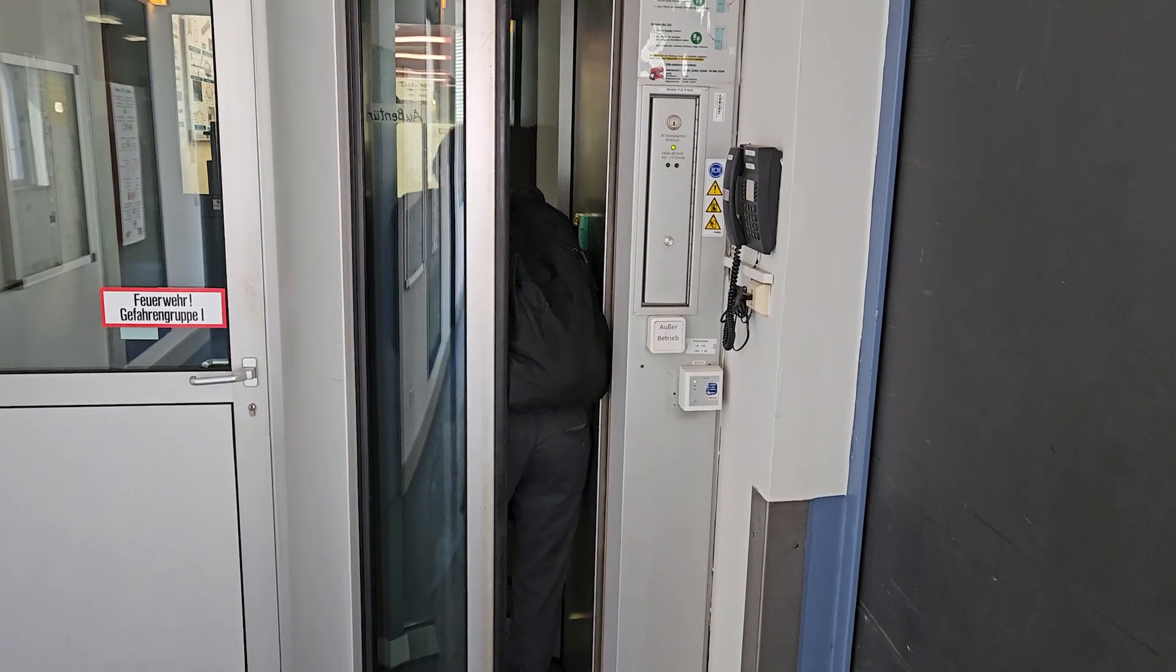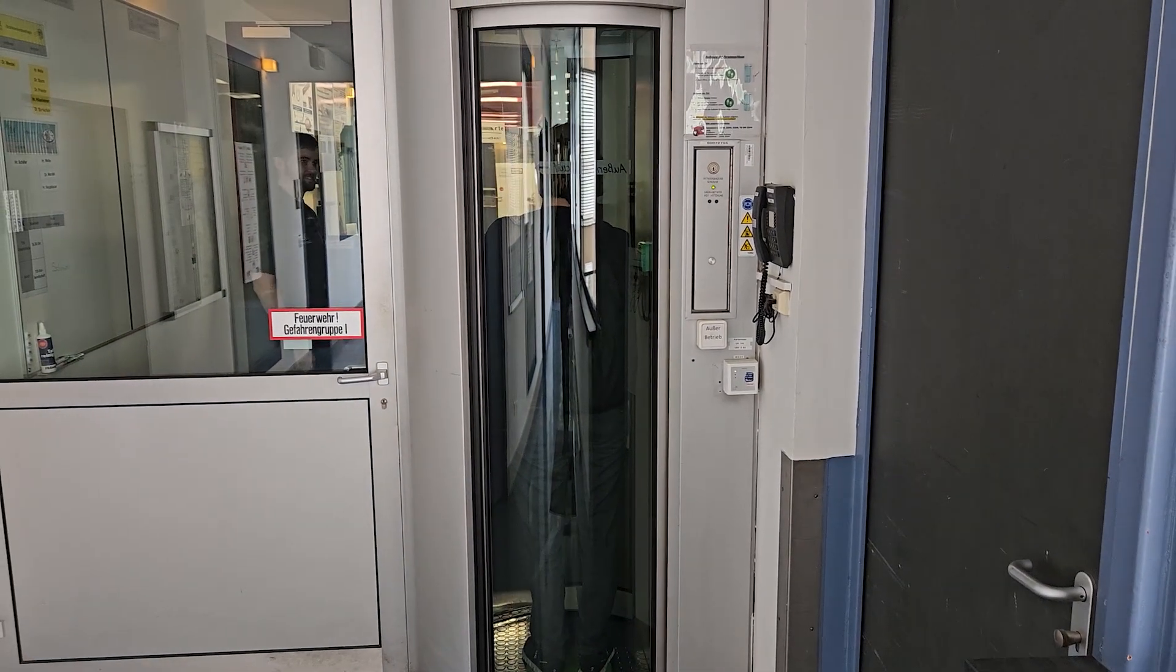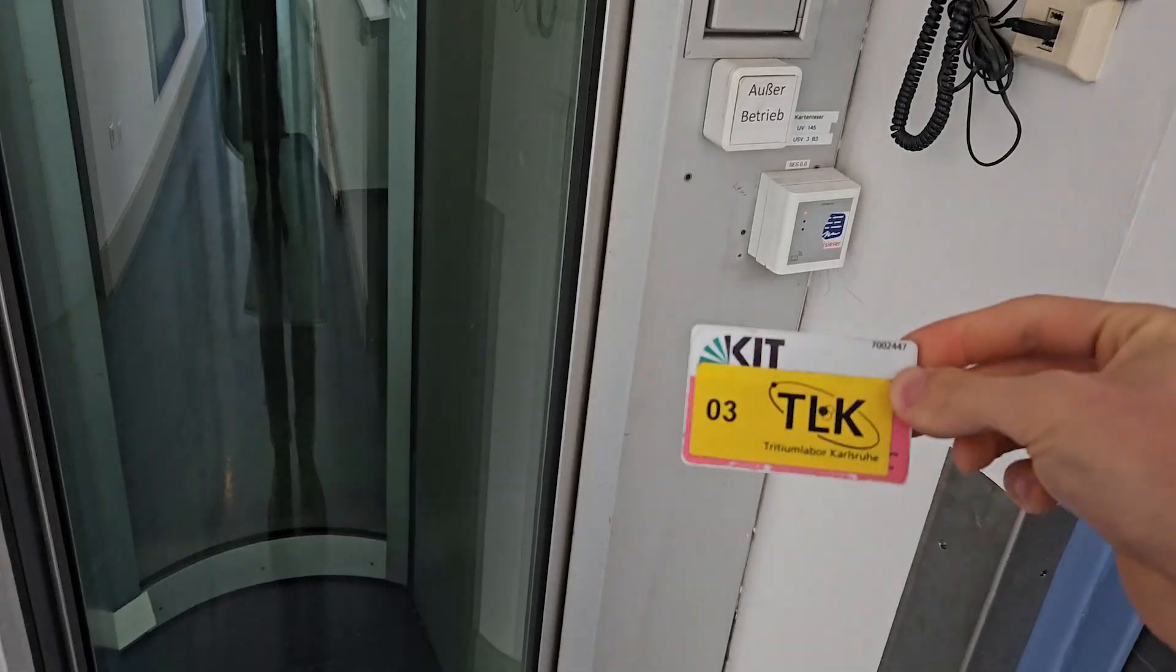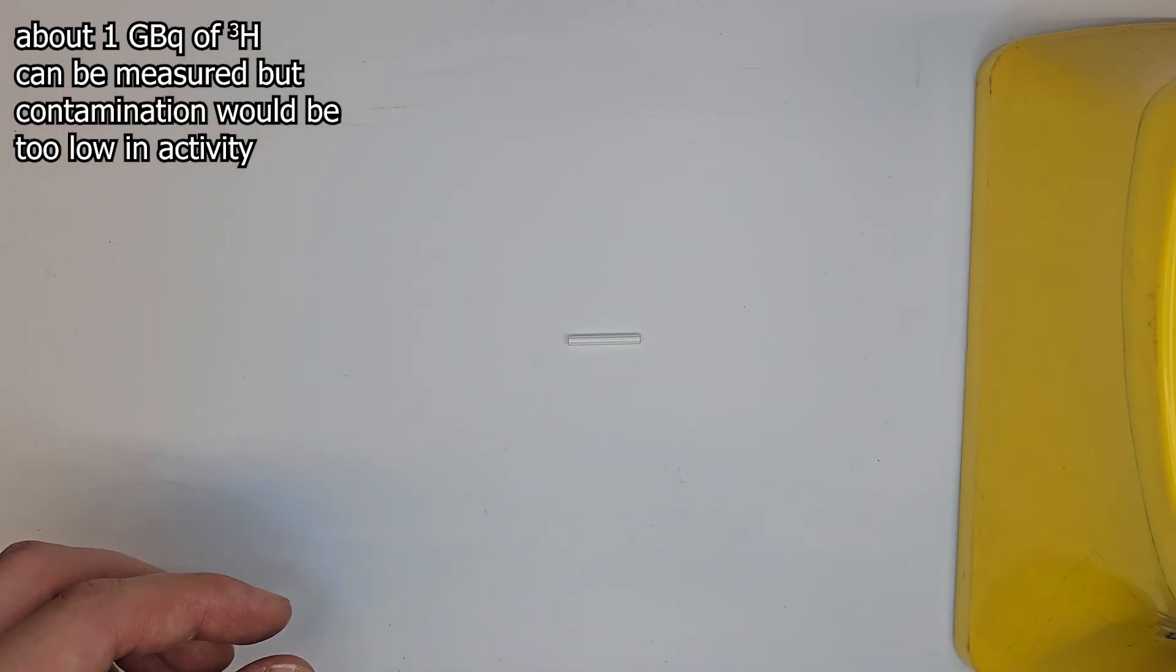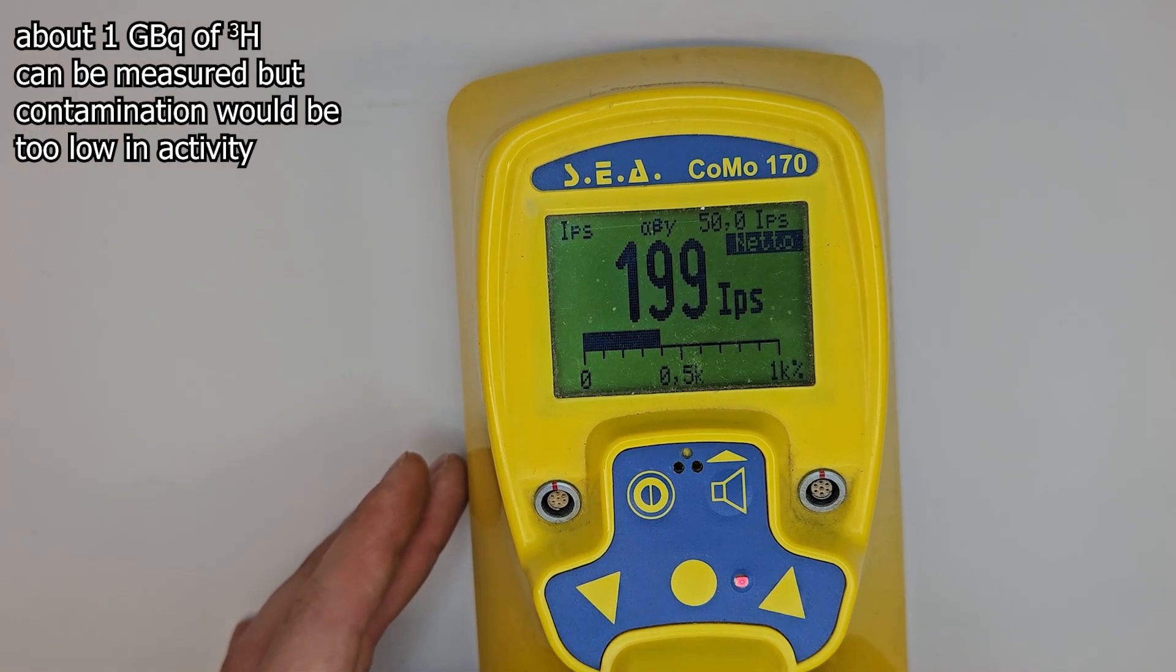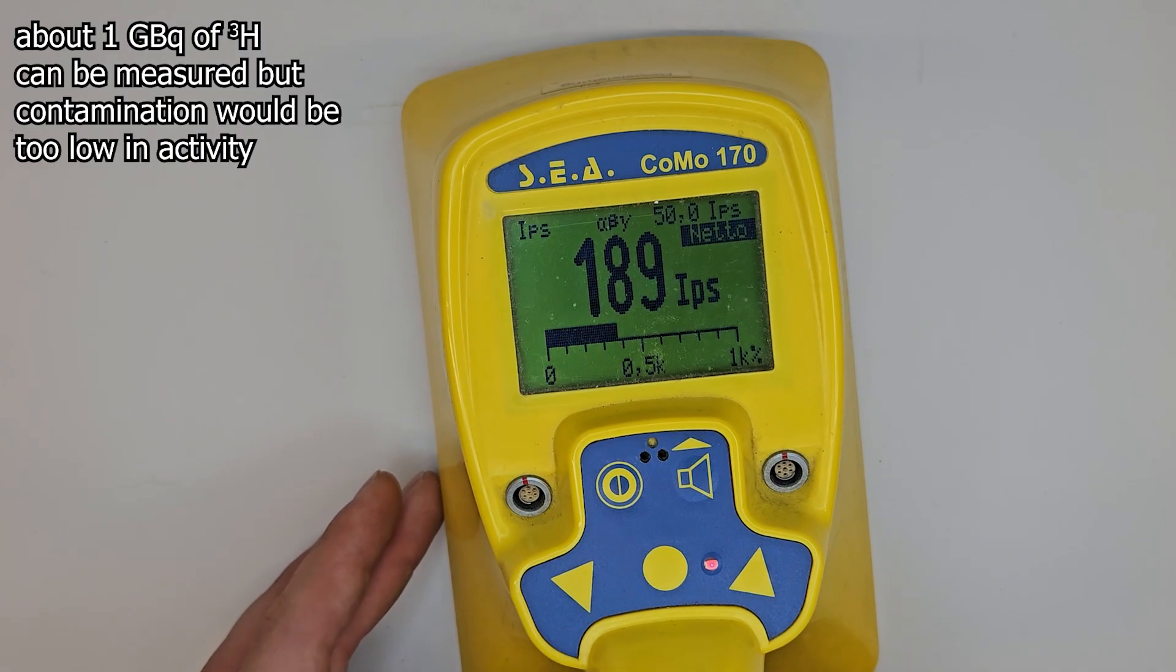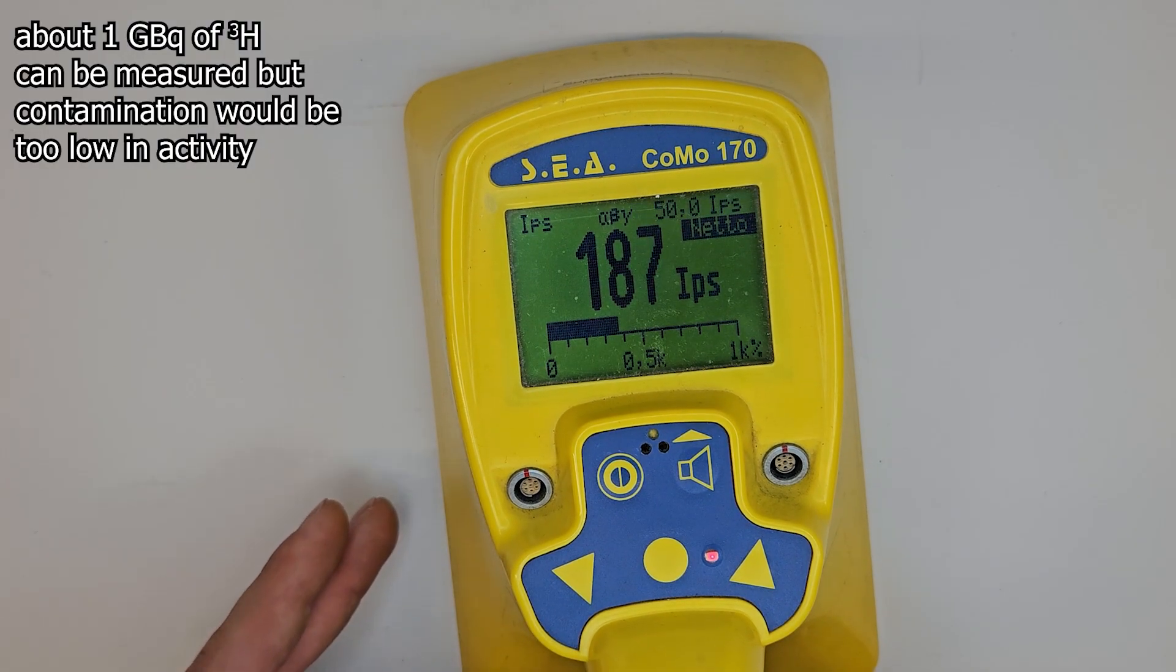So you go through an airlock into the laboratory, which, like all nuclear laboratories, is under negative pressure, so that nothing can go out. But you don't wear a film badge or an electronic personal dosimeter. They wouldn't react to the tritium radiation at all. There's also no such thing as a classical contamination monitor, as they also do not react to tritium radiation. Of course, there's a bit of Bremsstrahlung, but it's not worth mentioning.